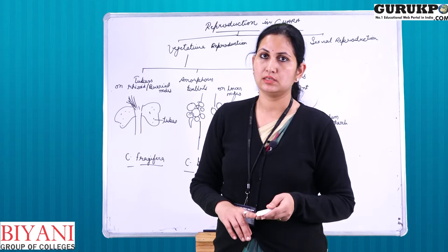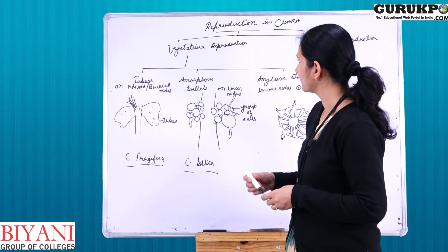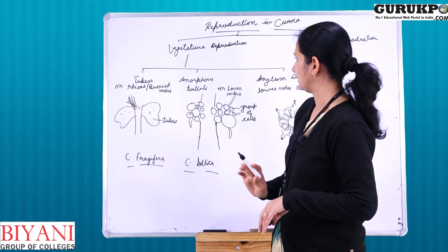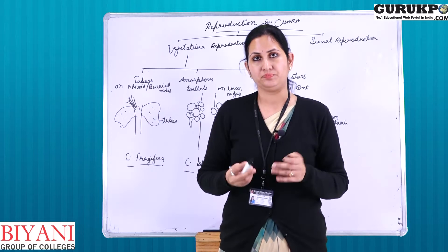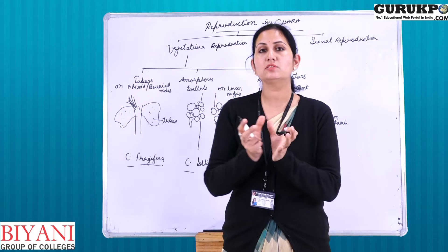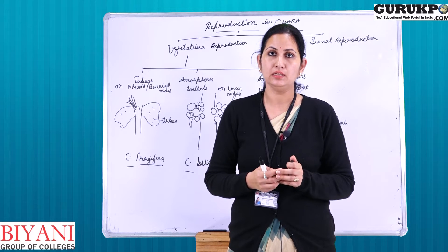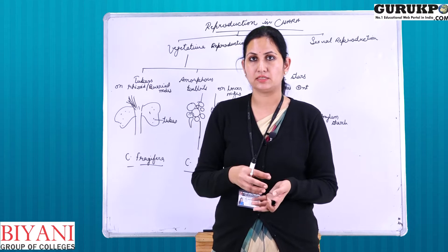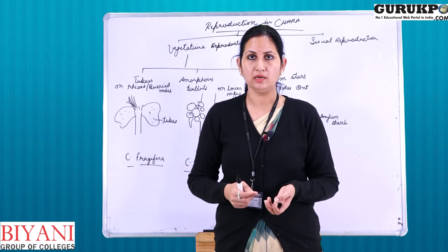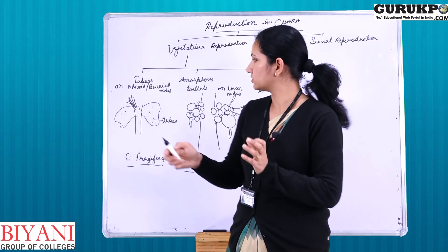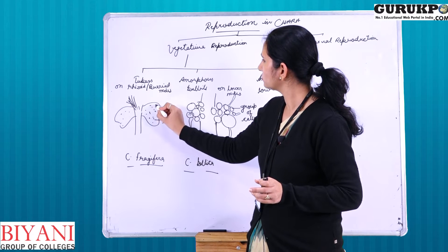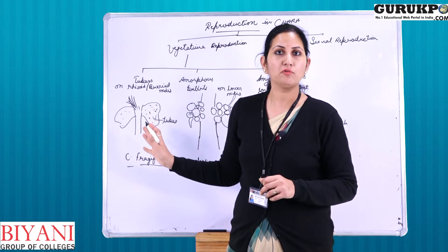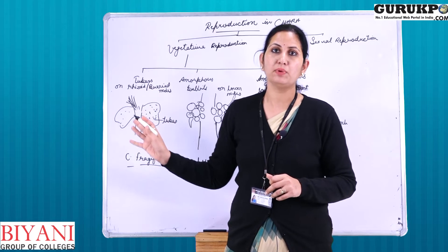Vegetative reproduction in Chara occurs in three ways: with the help of tubers, with the help of bulbils, and with the help of amyloid stars. Tubers are rounded structures filled with stored food material and they arise on the buried nodes or on the rhizoids of Chara. When these rounded structures detach from the rhizoid or from the buried nodes, they form a new plant of Chara.